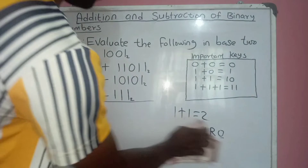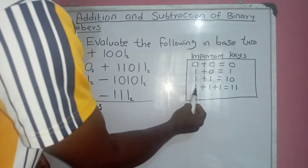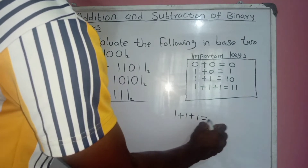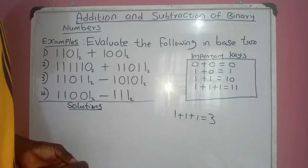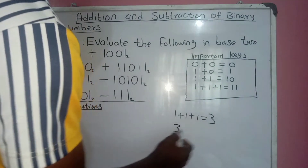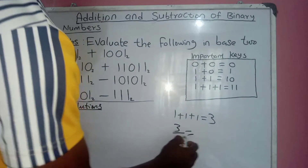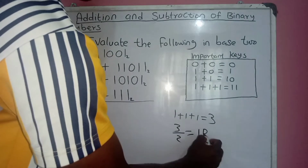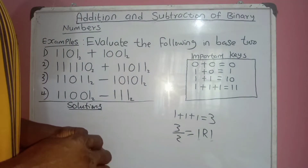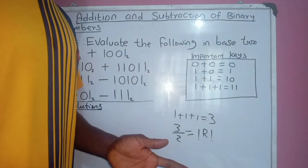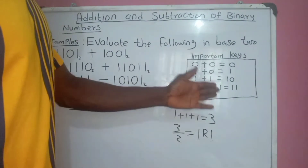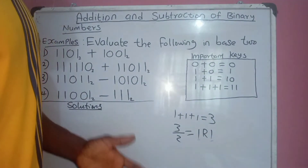For the next key: 1 plus 1 plus 1 would ordinarily give us 3, but we cannot write 3 in base 2. So we divide 3 by 2, which gives 1 remainder 1 — making it 1, 1. Some students call it 11. So 1+1 in binary is 10, and 1+1+1 in binary is 11.